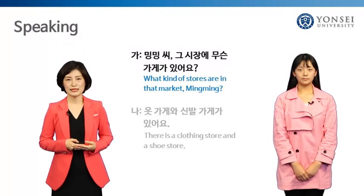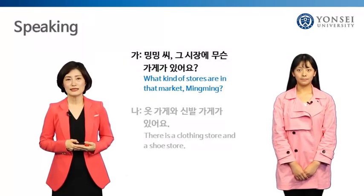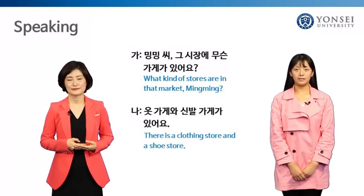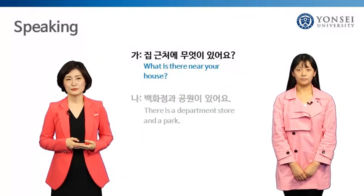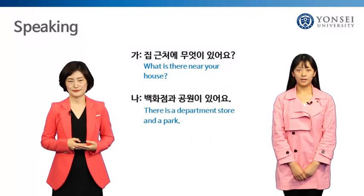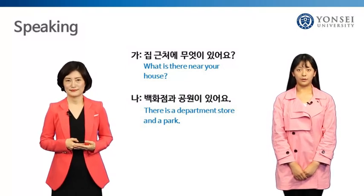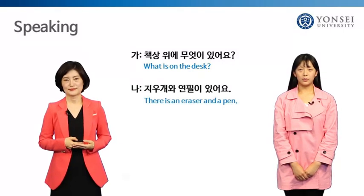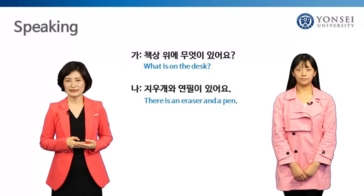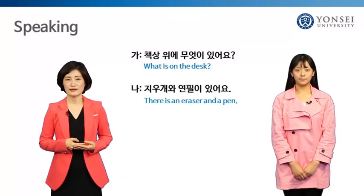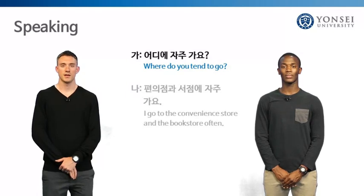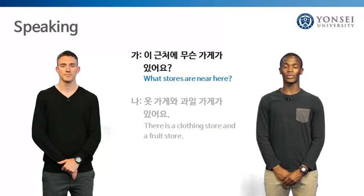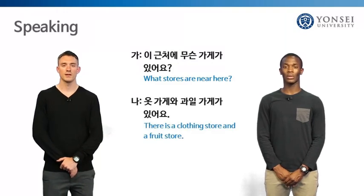This time, please answer my questions. 그 시장에 무슨 가게가 있어요? 옷가게와 신발 가게가 있어요. 집 근처에 무엇이 있어요? 백화점과 공원이 있어요. 책상 위에 무엇이 있어요? 지우개와 연필이 있어요. Now ask your friend a question and let them answer. 편의점과 서점에 자주 가요. 이 근처에 무슨 가게가 있어요? 옷가게와 과일 가게가 있어요.